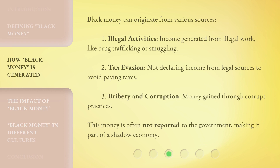Black money can originate from various sources. First, illegal activities — income generated from illegal work, like drug trafficking or smuggling. Second, tax evasion — not declaring income from legal sources to avoid paying taxes. Third, bribery and corruption — money gained through corrupt practices. This money is often not reported to the government, making it part of a shadow economy.